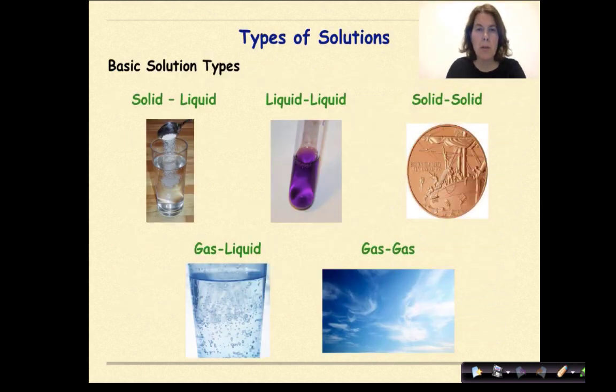Let's talk about some basic types of solutions. You can have your classic solid-liquid solution where you have your solvent being something like water and you're adding solute like sodium chloride. You can have a liquid-liquid solution, say you add food coloring to water. You can also have a solid-solid solution like many types of metals, 24 karat gold, 12 karat gold, where you have primarily one metal mixed with another metal.